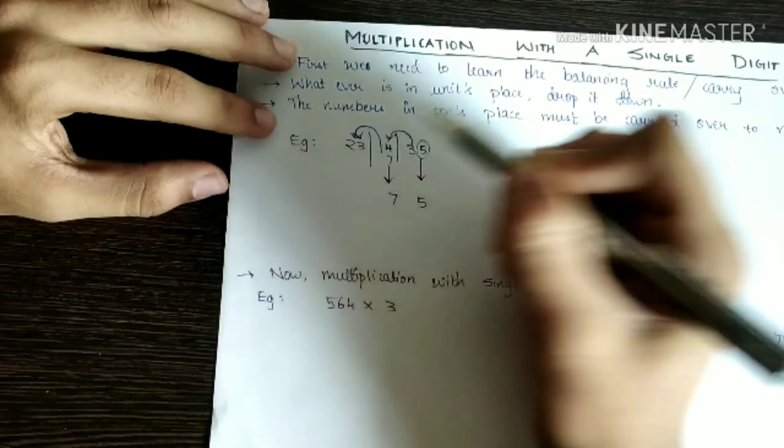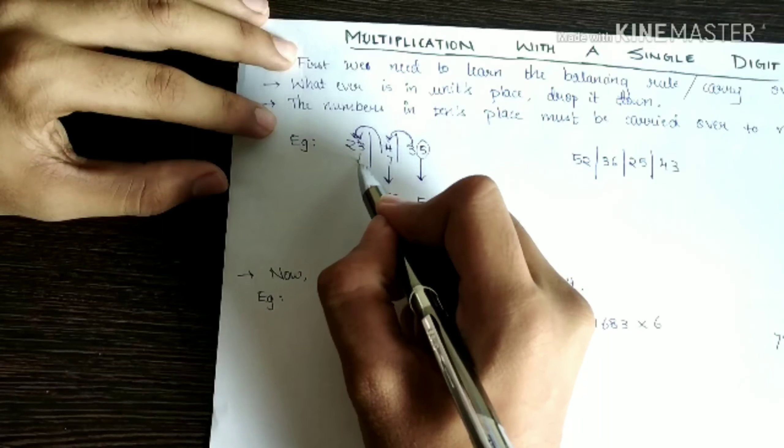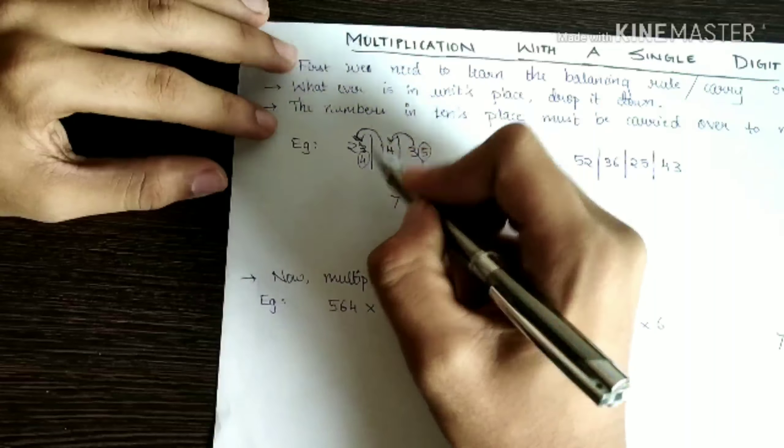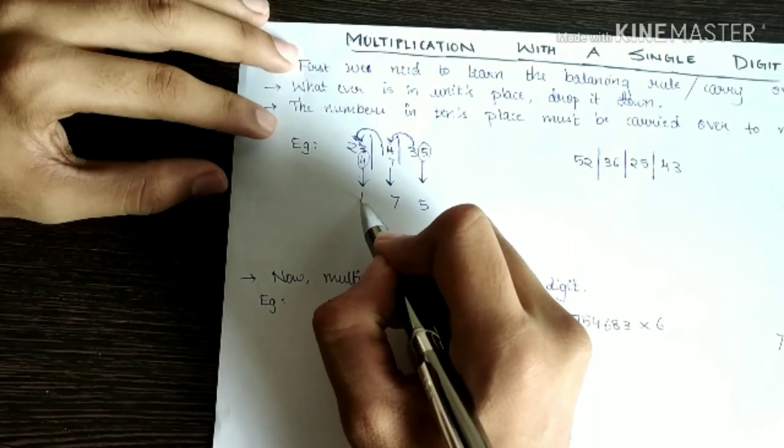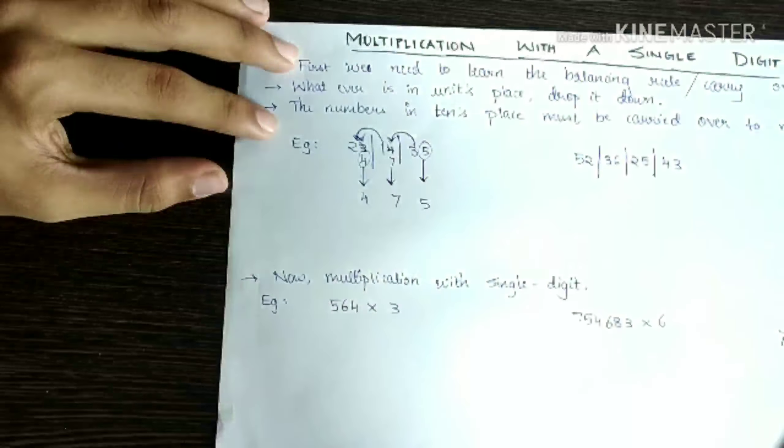Carry over to the next one. I am sorry, to three not to two. One plus three is four. This becomes four now. And four is in units place.